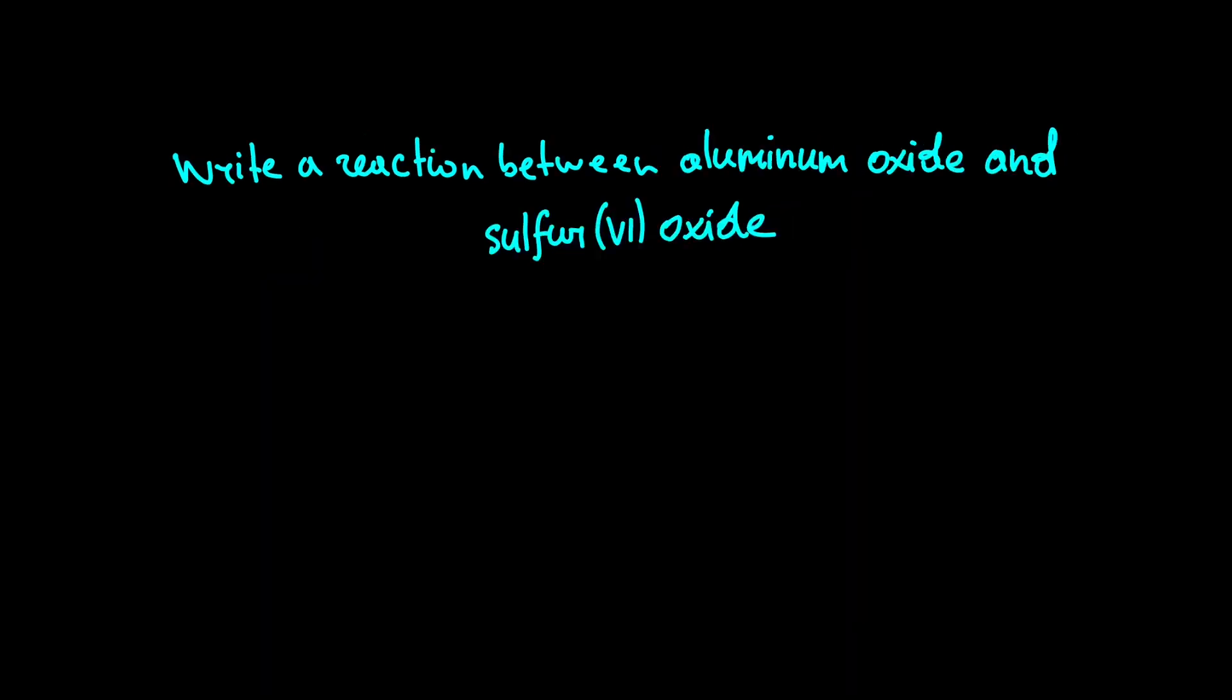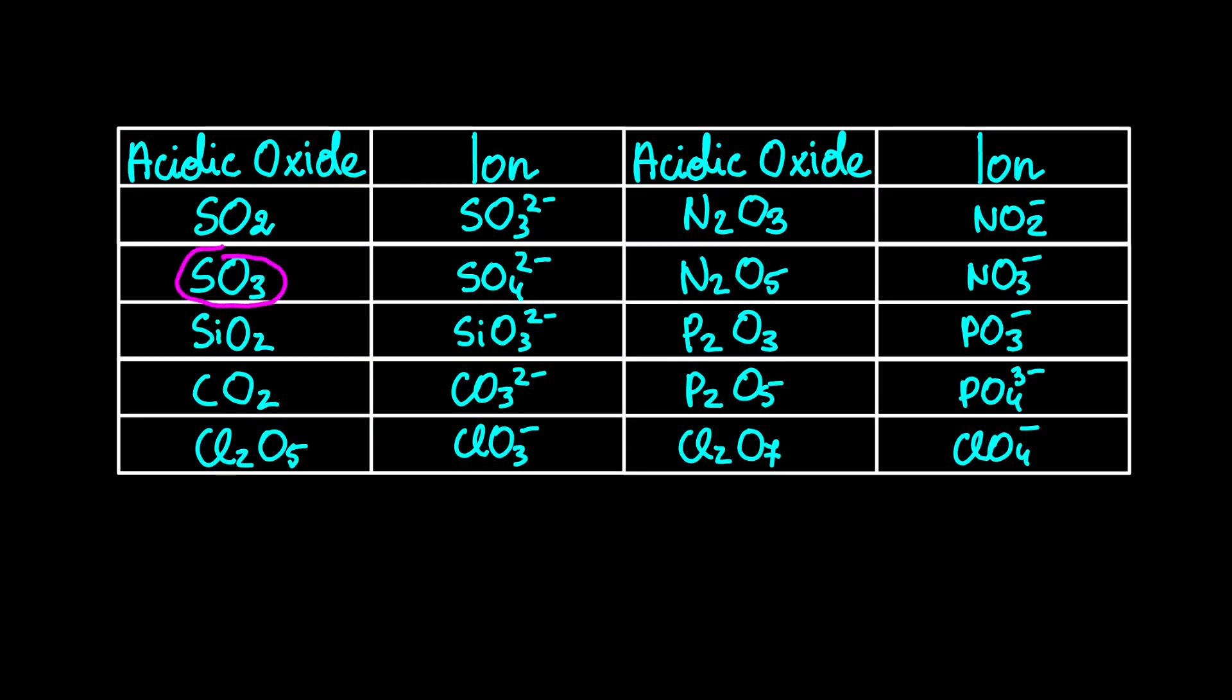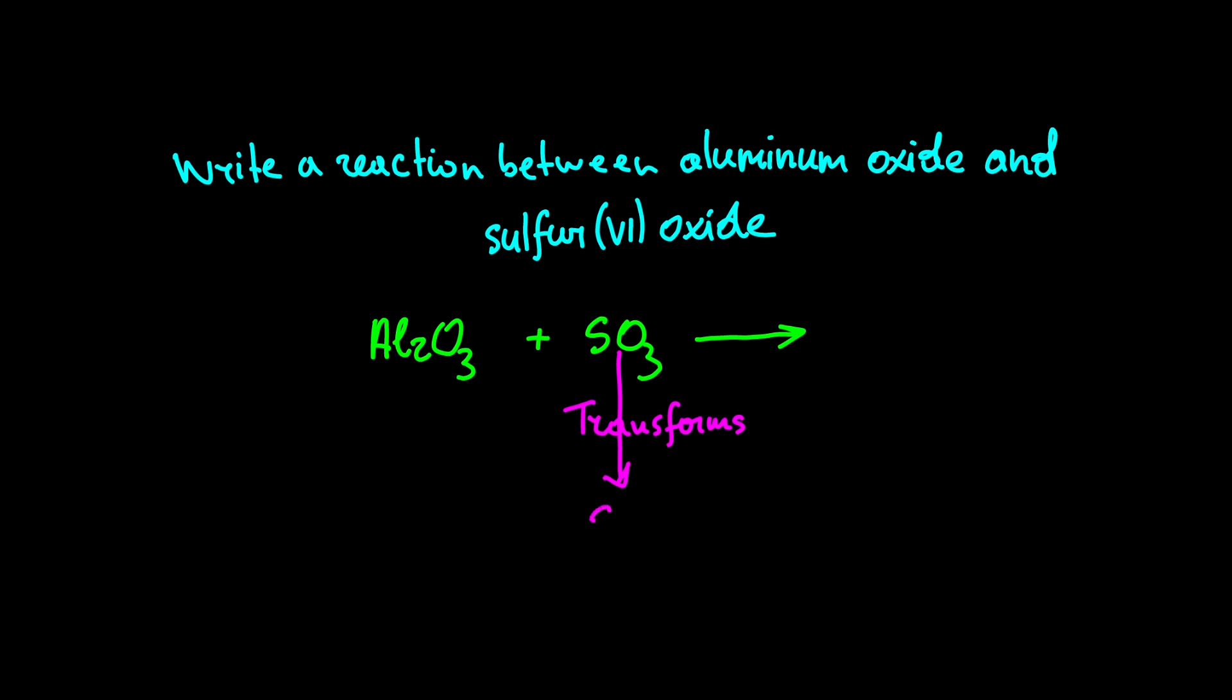What happens if aluminum oxide reacts with sulfur VI oxide? Well, sulfur VI oxide must transform into an ion because it is an acidic oxide. In our table, we can see that SO3 always becomes SO4 2- after the reaction, and sulfate ion combines with aluminum because it is the first element in the compound. We get Al 3+ and SO4 2-.